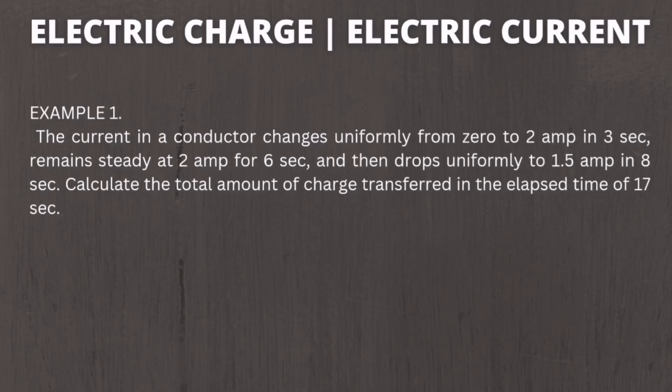For example number one: the current in a conductor changes uniformly from 0 to 2 amperes in 3 seconds, remains steady at 2 amperes for 6 seconds, then drops uniformly to 1.5 amperes in 8 seconds. Calculate the total amount of charge transferred in the elapsed time of 17 seconds. The required is charge Q, so the formula is Q equals I multiplied by time in seconds.